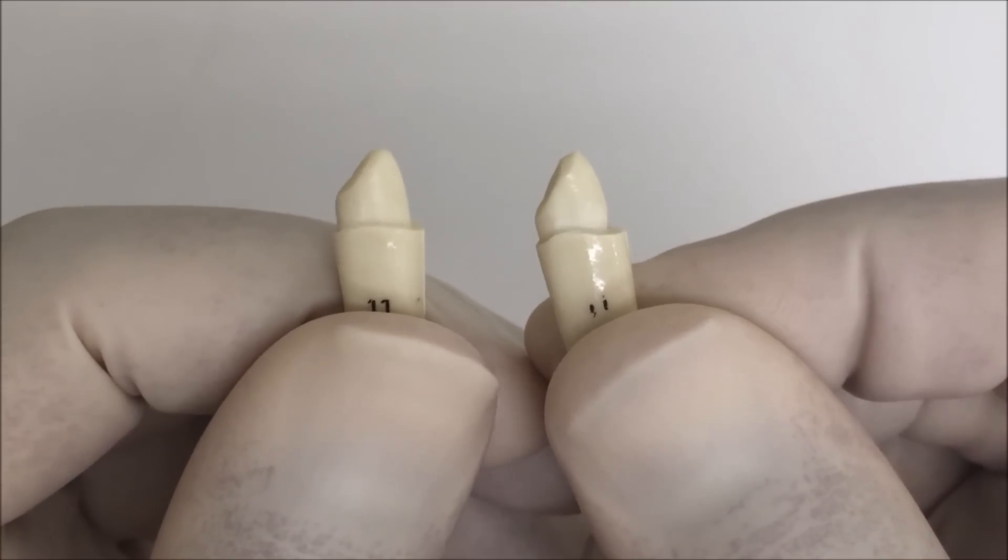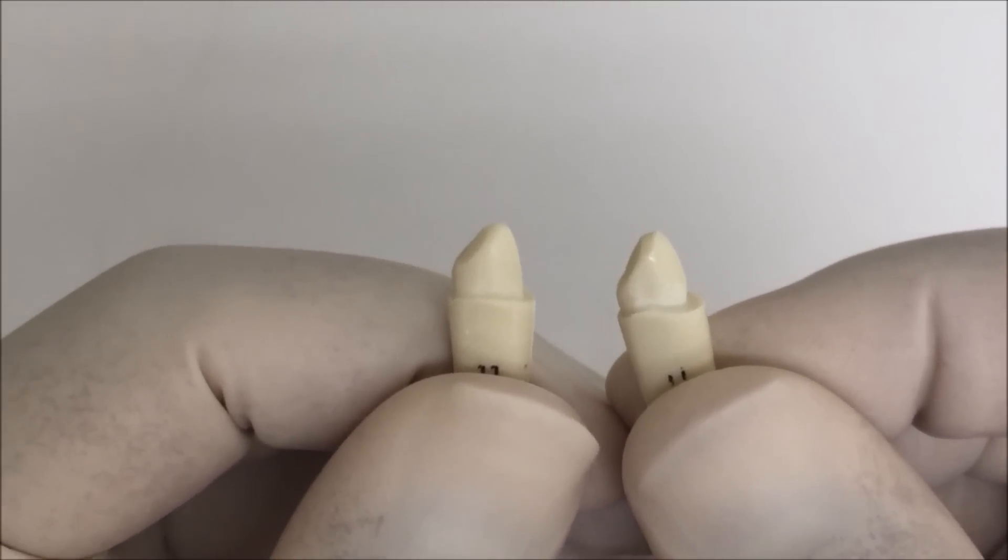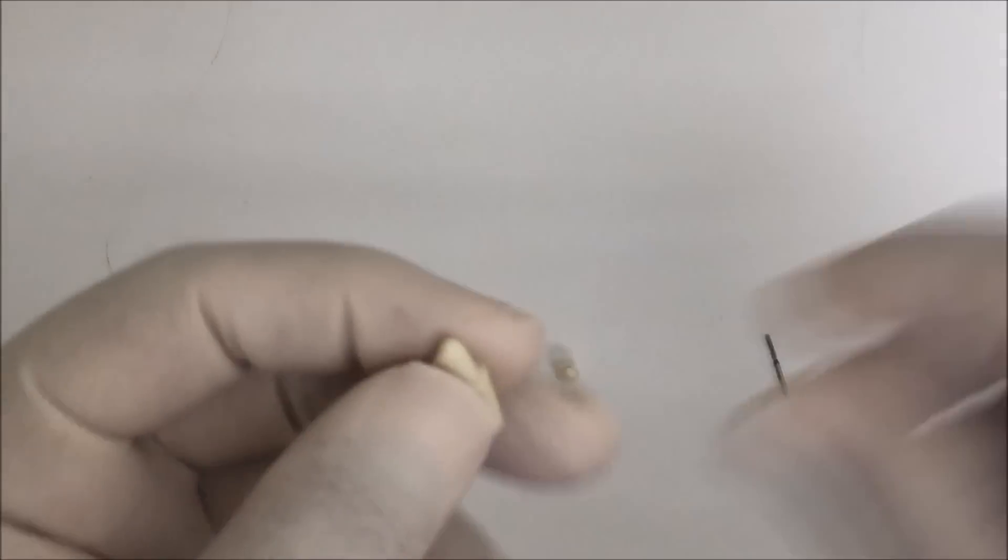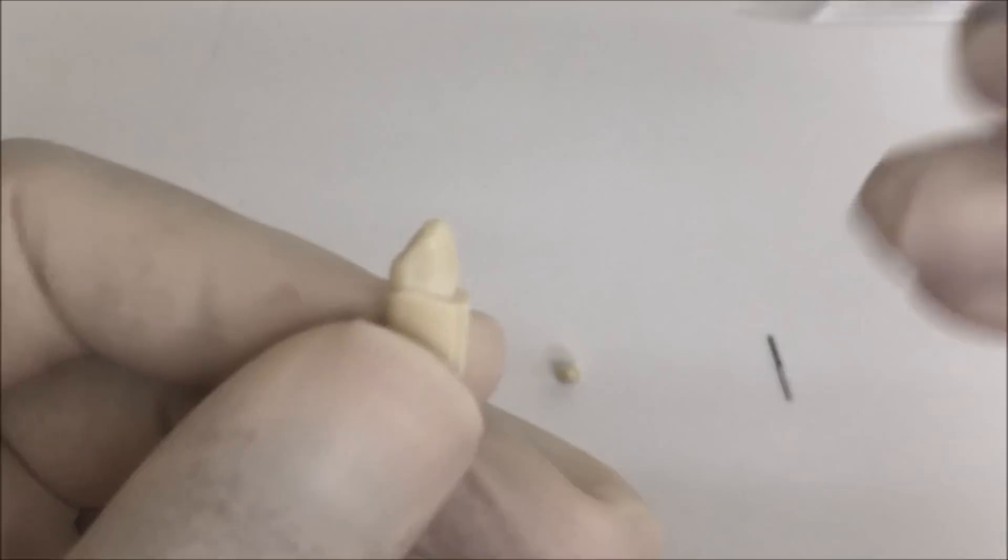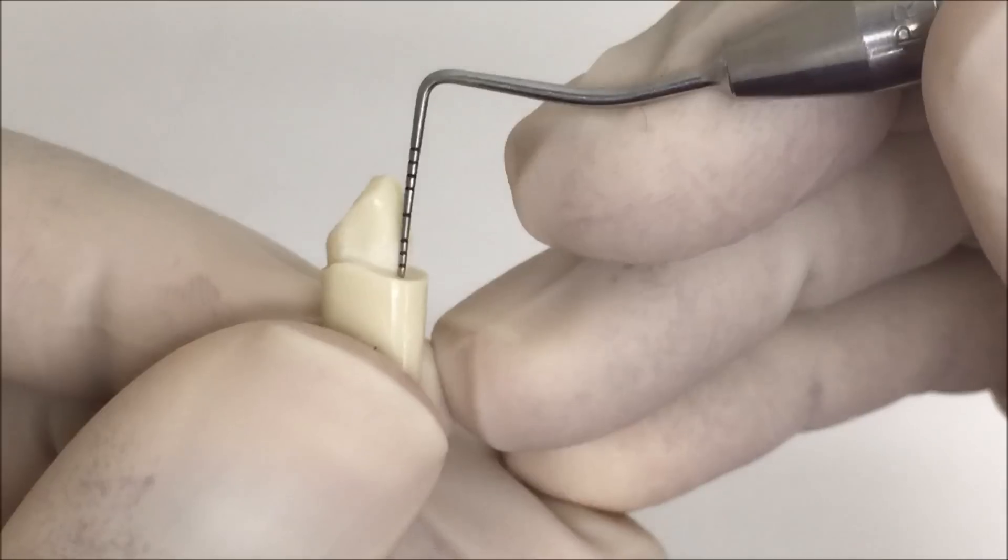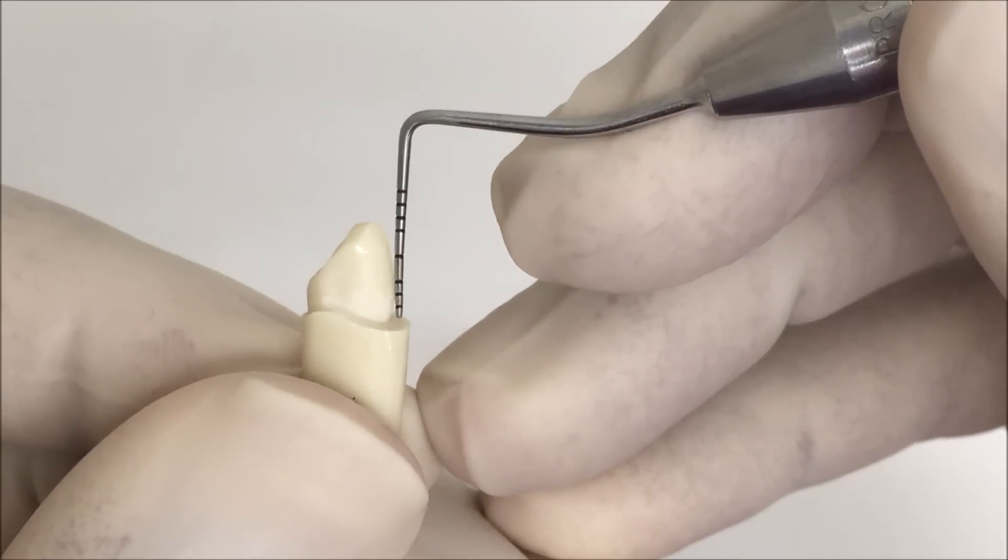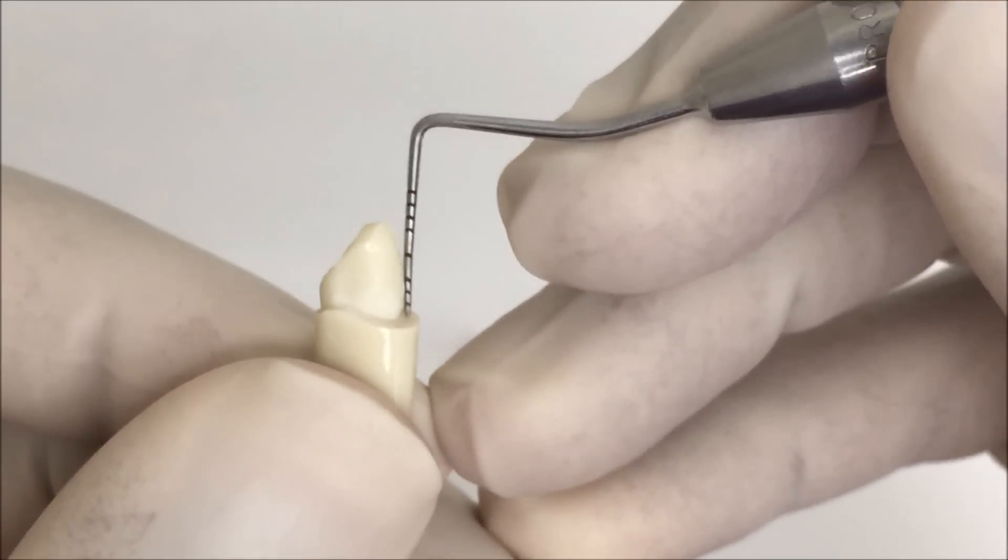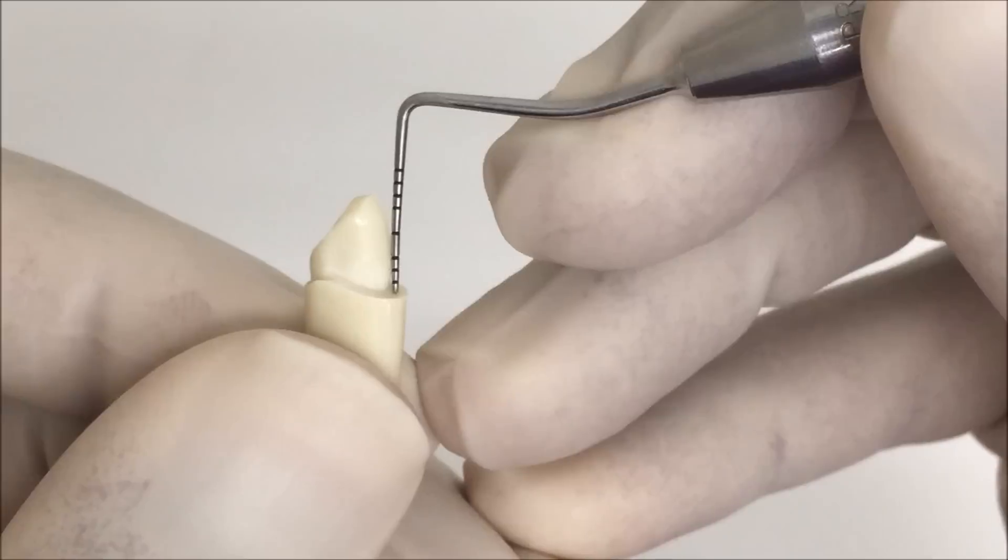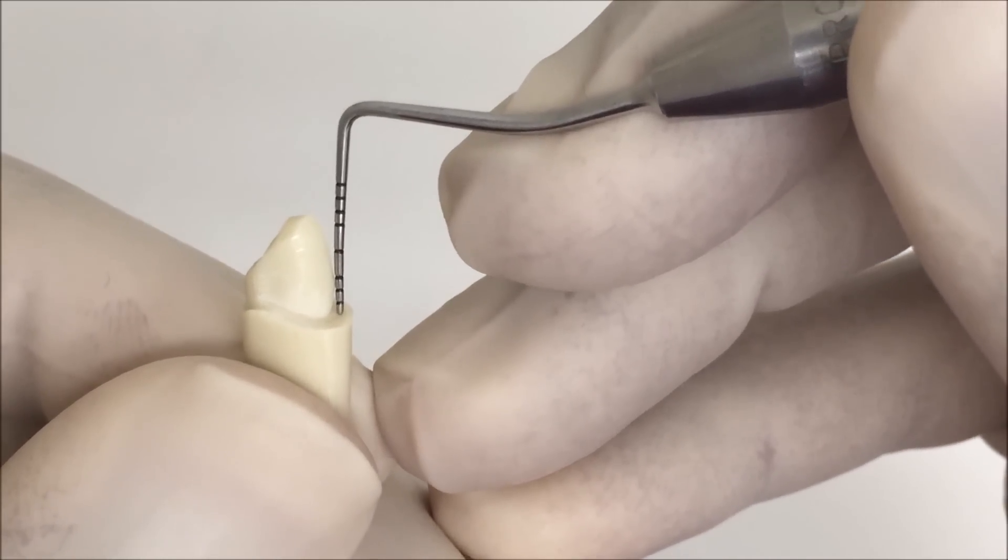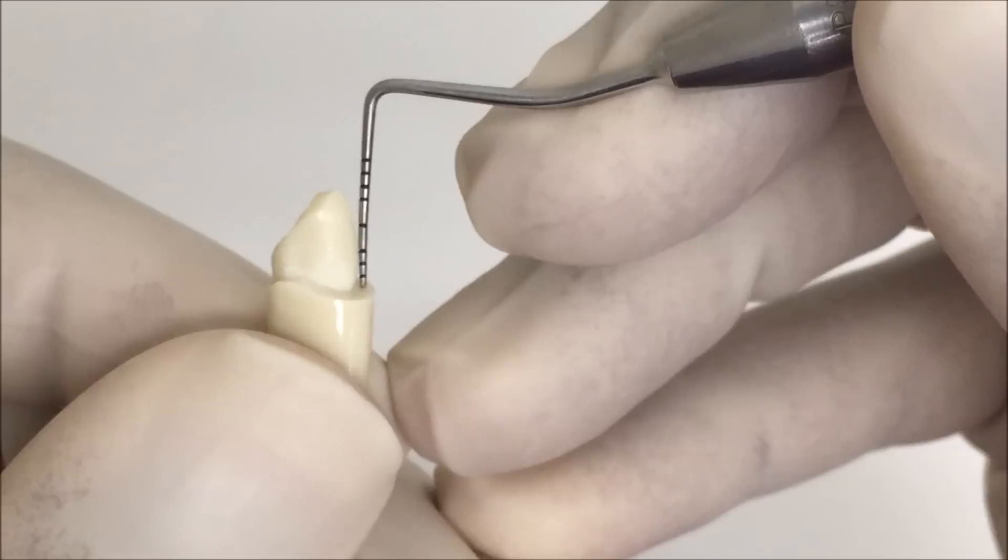Coming back to the first method, which is using the instrument: by putting the instrument parallel to the cervical third of the tooth, you can see that it is not completely in contact with the surface. You can see there is a small area near the margin that makes a triangle with the instrument. So in this case, you can see there is an undercut.